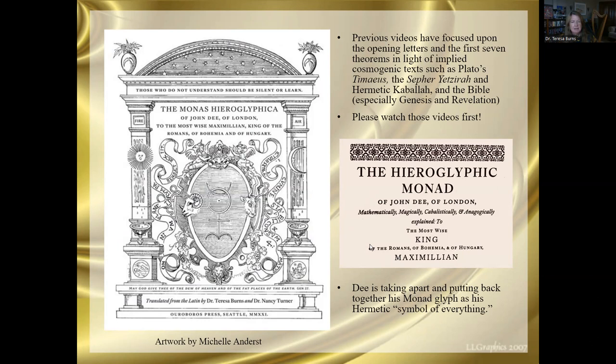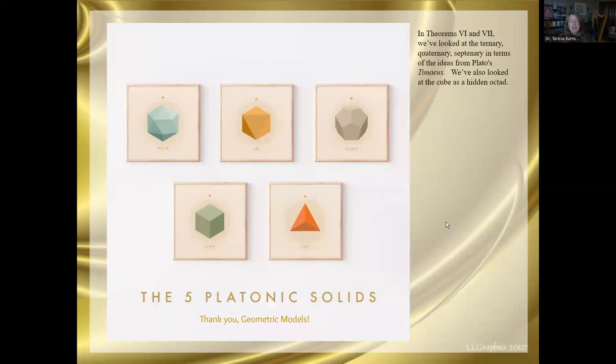All right, so please watch those earlier videos. If you don't, some of what I'm saying may not make a whole lot of sense. Dee is taking apart this symbol, his Monas Glyph, and putting it back together as his Hermetic symbol of literally everything, how the world was created. All right, in earlier videos, we have just talked about in theorem six and seven, the ternary, something that refers to three, quaternary, something that refers to four, the septenary, something that refers to seven, and we've looked at these in terms of the idea in Plato's Timaeus. We've also looked at the cube as a hidden octane because of the notion that he is always flipping forms. A circle always implies a sphere, a square will always imply a cube, and so forth.